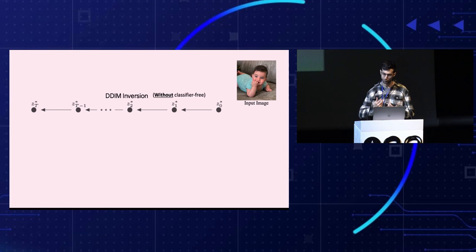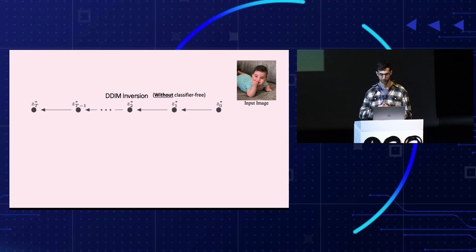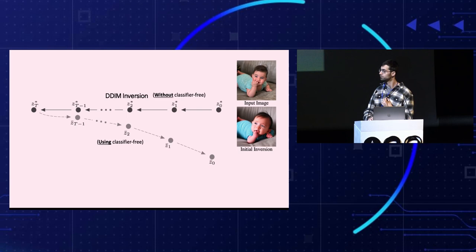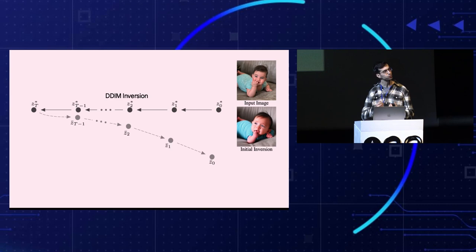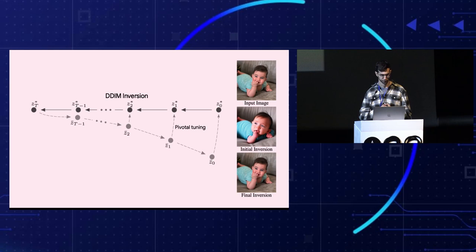We use the DDIM inversion to produce a latent trajectory from the original image Z0 to a noise vector ZT. Feeding this noise vector to the diffusion process results in distortion when the classifier-free guidance is applied, as the latent codes become farther away from the original trajectory. Inspired by the pivotal tuning approach, we consider the DDIM inversion trajectory as a pivot and perform a second step optimization around this anchor. More specifically, we aim to bring the diffusion backward trajectory closer to the original image. Ideally, if the trajectory is identical in both directions, we will get a perfect reconstruction.